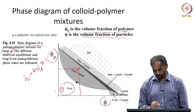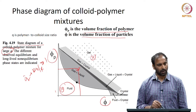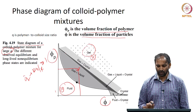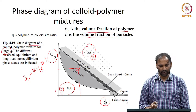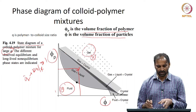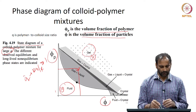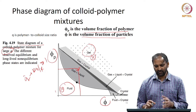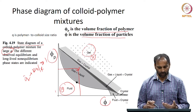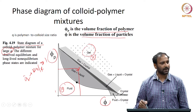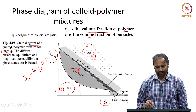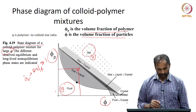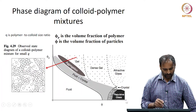Going to higher concentrations of particles and polymer, you could have a gel-like system. This gives a broad picture of the different states observed in colloid-polymer mixtures. People have done experiments with a variety of polymer-colloid mixtures and classified the different phases that come about and their typical concentration ranges.